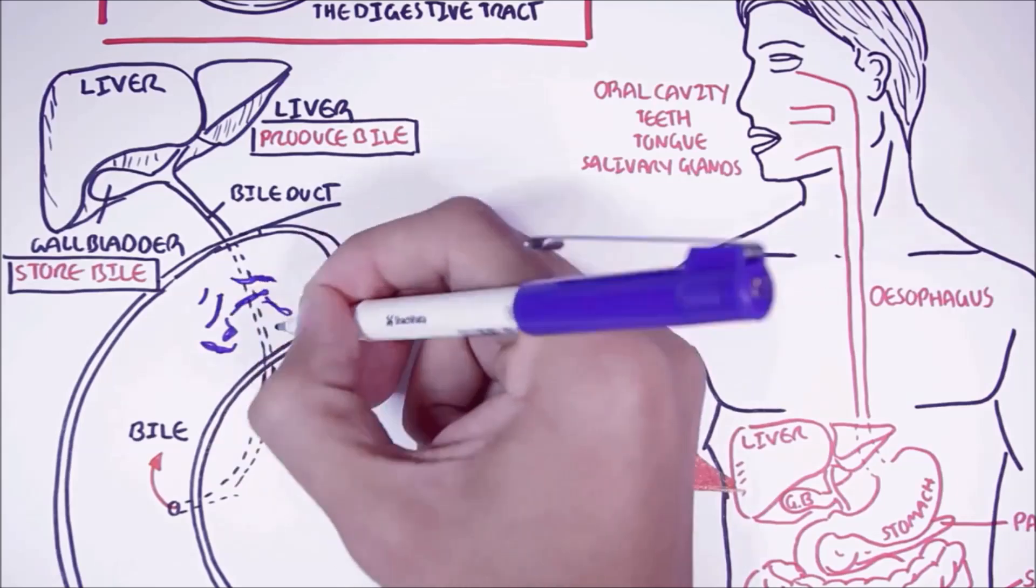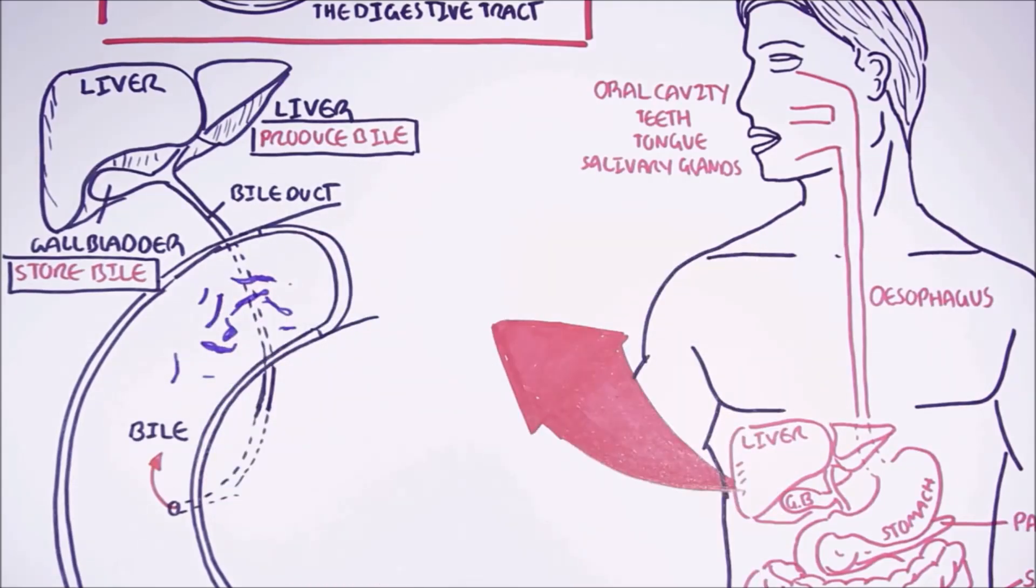So to see where the food is, the chyme is coming from the stomach and is here within the small intestine now.